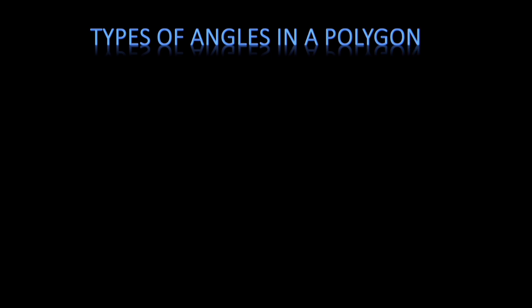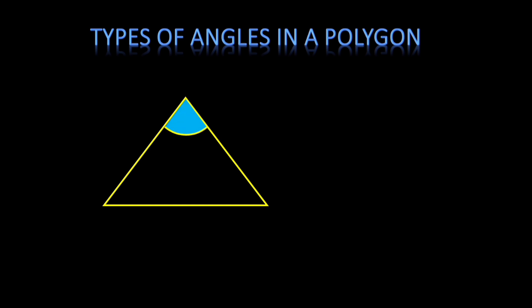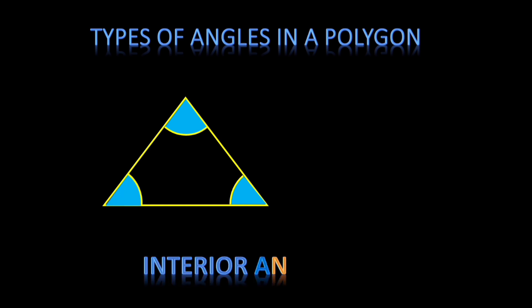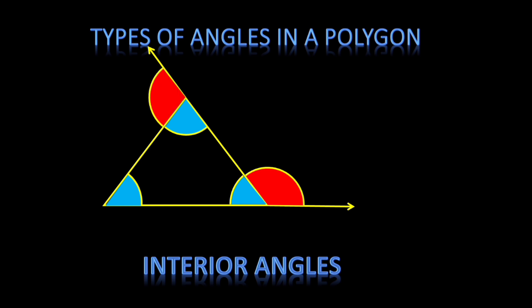A polygon is a simple closed curve made up of only line segments, and the simplest polygon is a triangle. In any polygon, the number of sides is equal to the number of angles. The angles present in the interior part of the polygon are called interior angles, and when the sides are extended, the angles formed outside the polygon are called exterior angles.